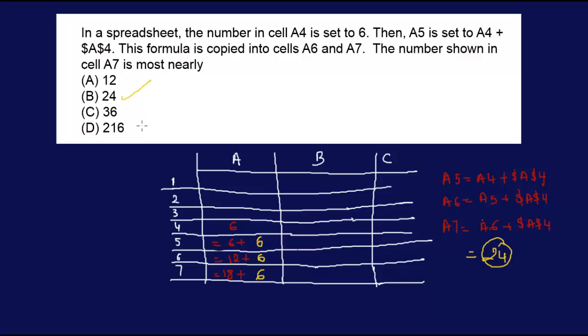So if for instance this formula was like B3, then you would have to change. Whatever column or row that you move, you have to move that. You just follow that simple logic, except when you have a dollar sign. Dollar sign remains unchanged.